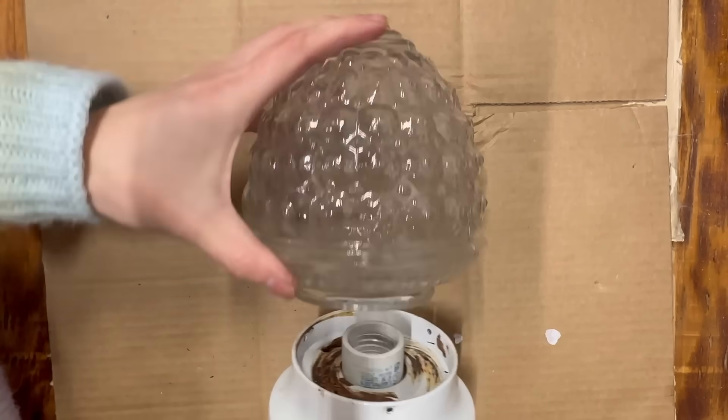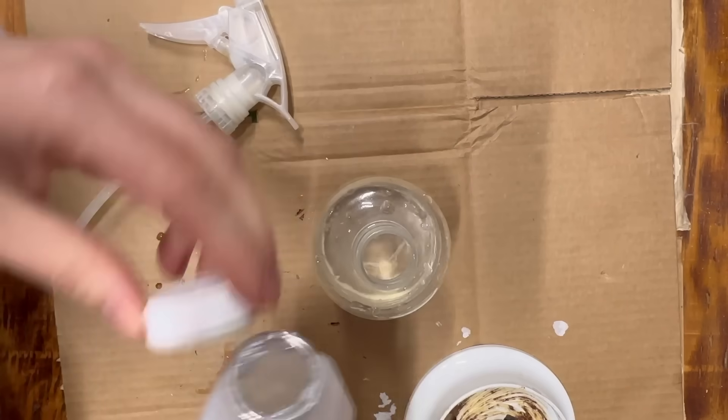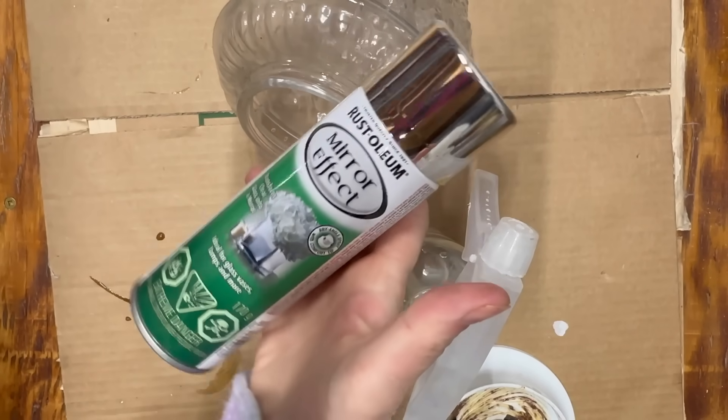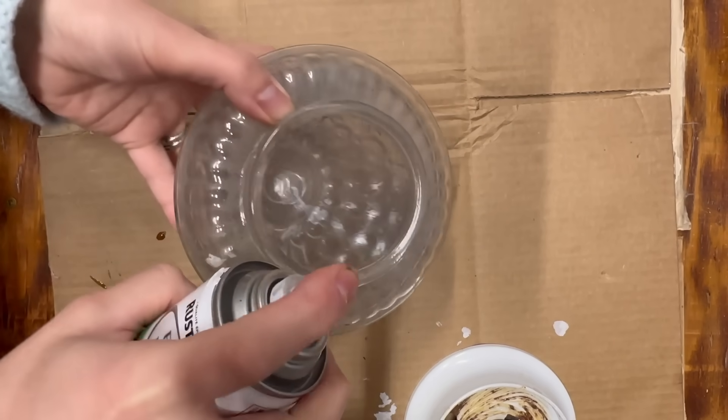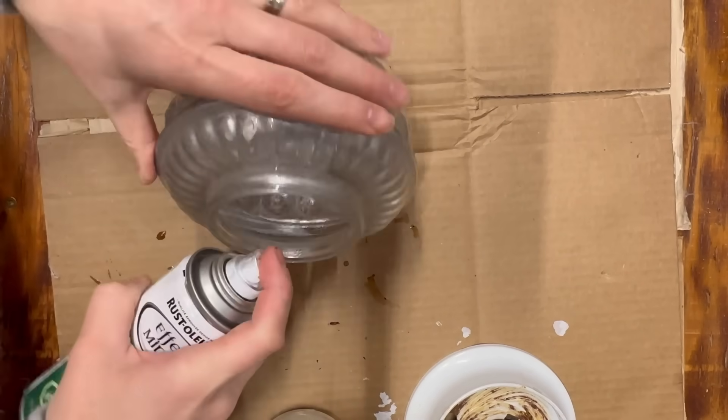I grabbed some mirror paint and thrifted light fixtures. I added a splash of vinegar to a spray bottle with water and lightly sprayed the inside of the glass light fixture. Next, I sprayed the mirror paint on the inside and drained the extra water and paint out.